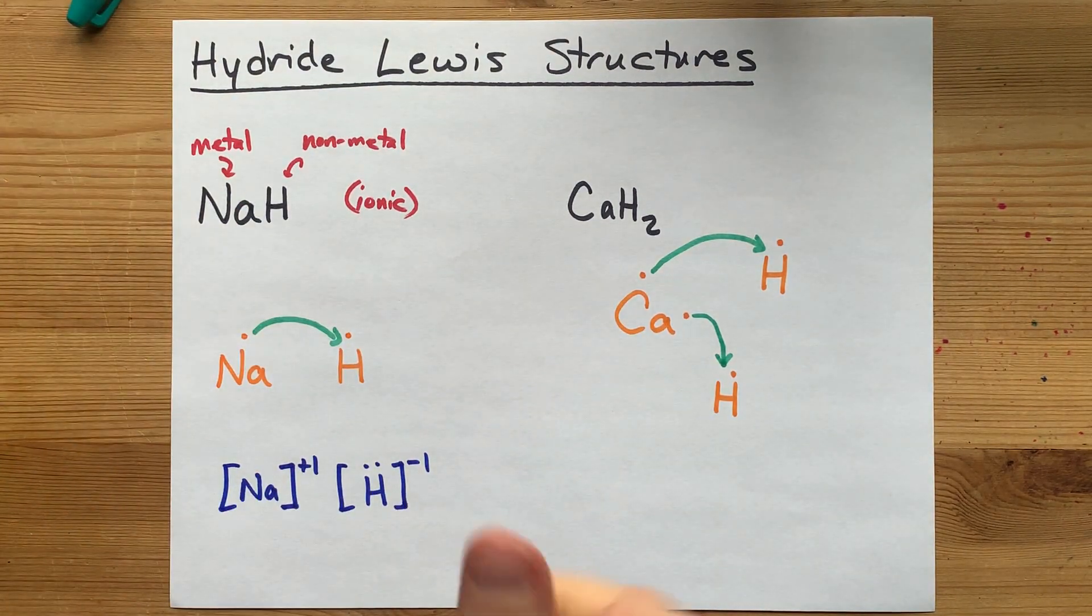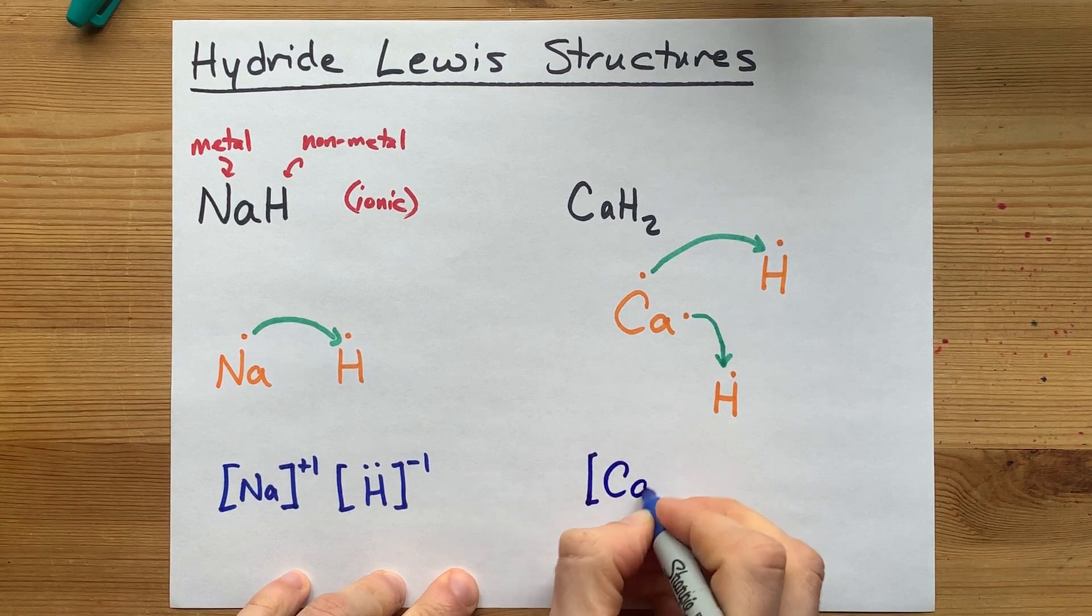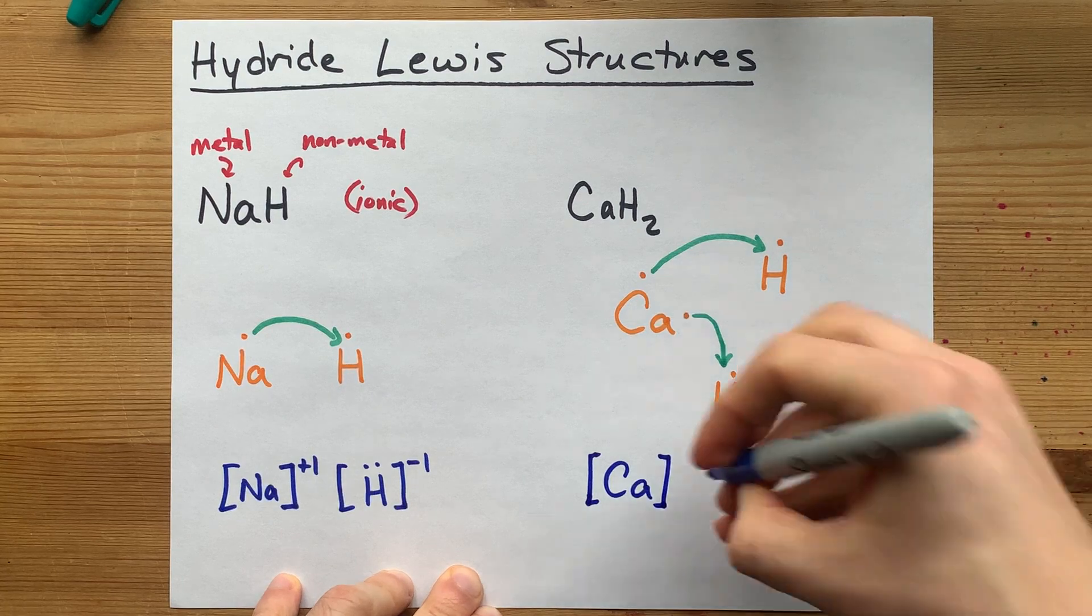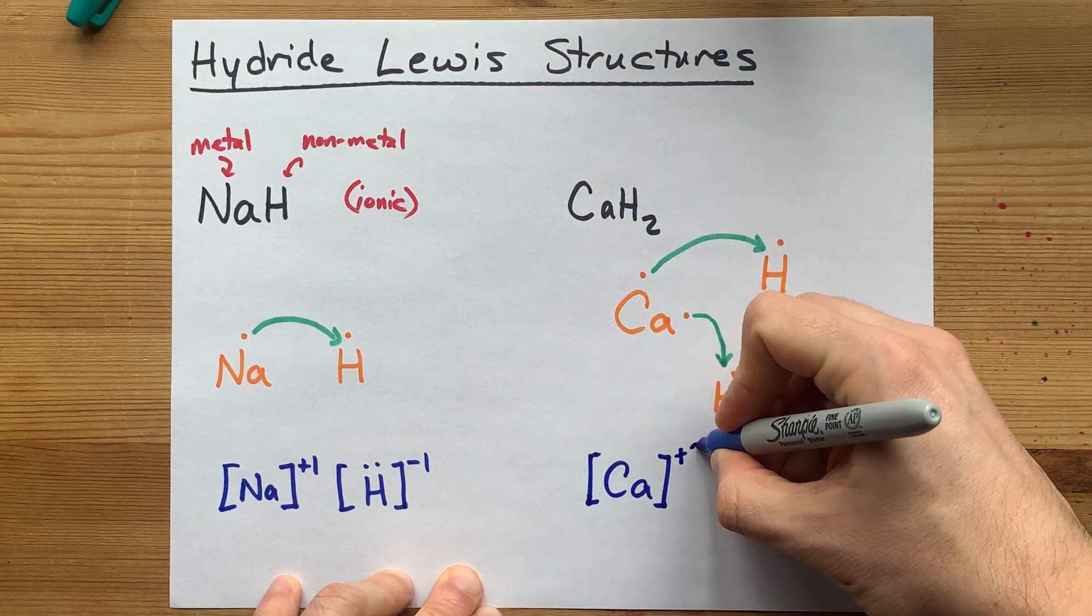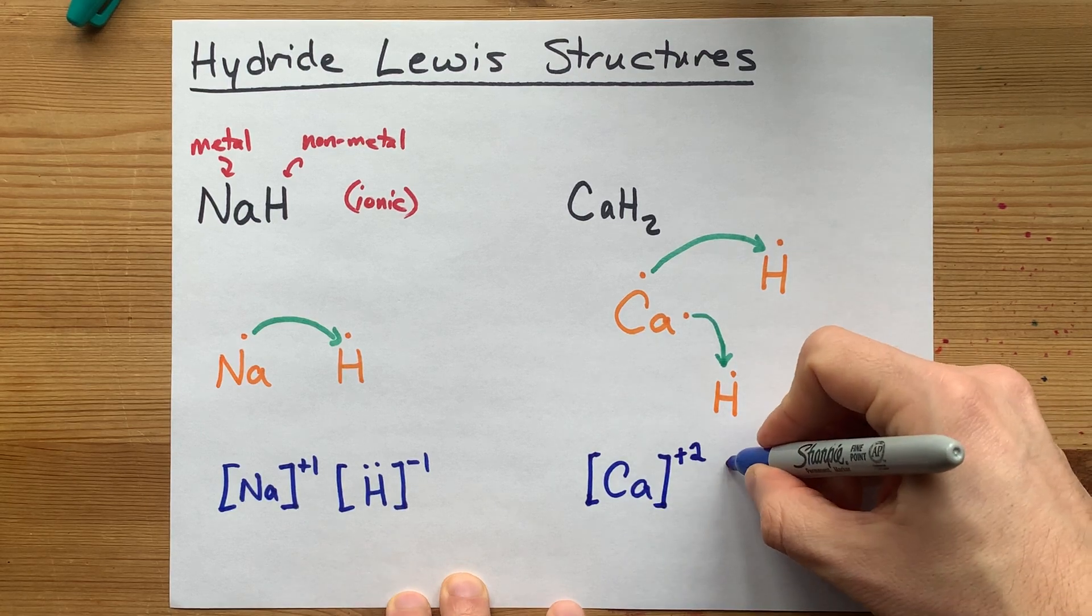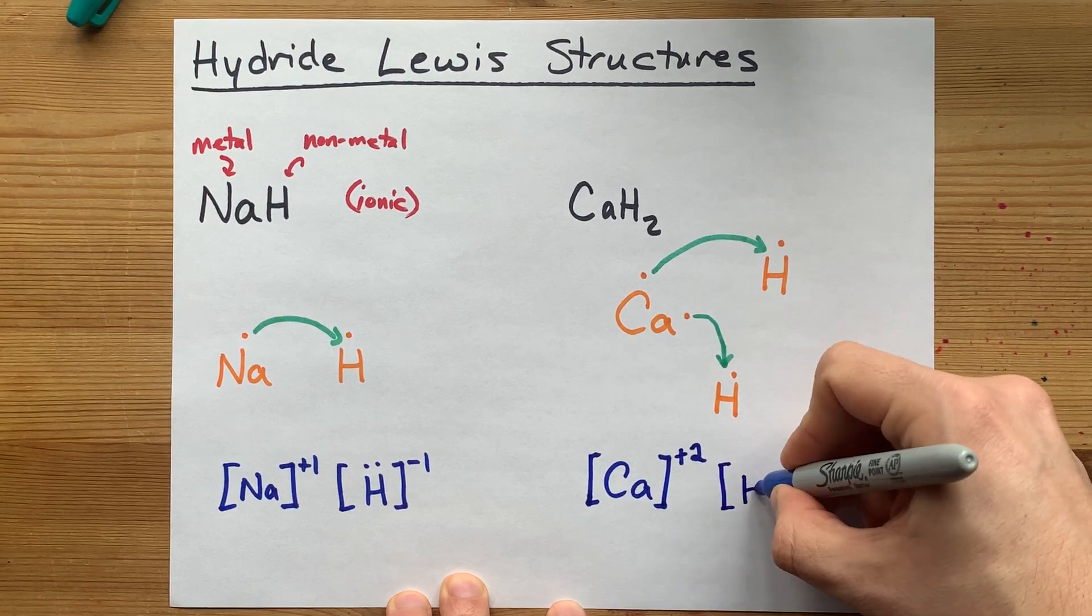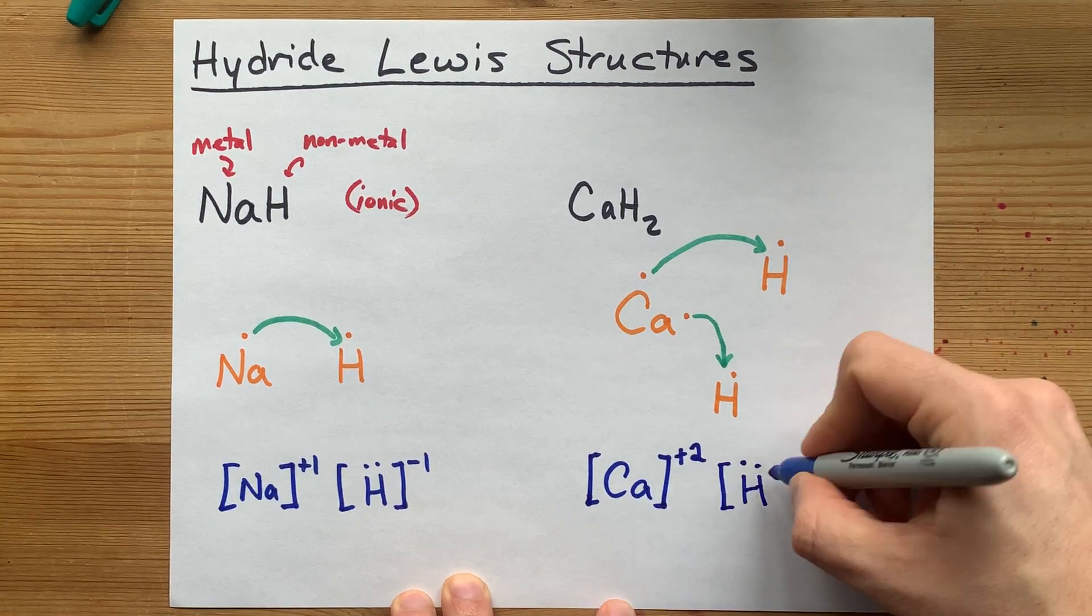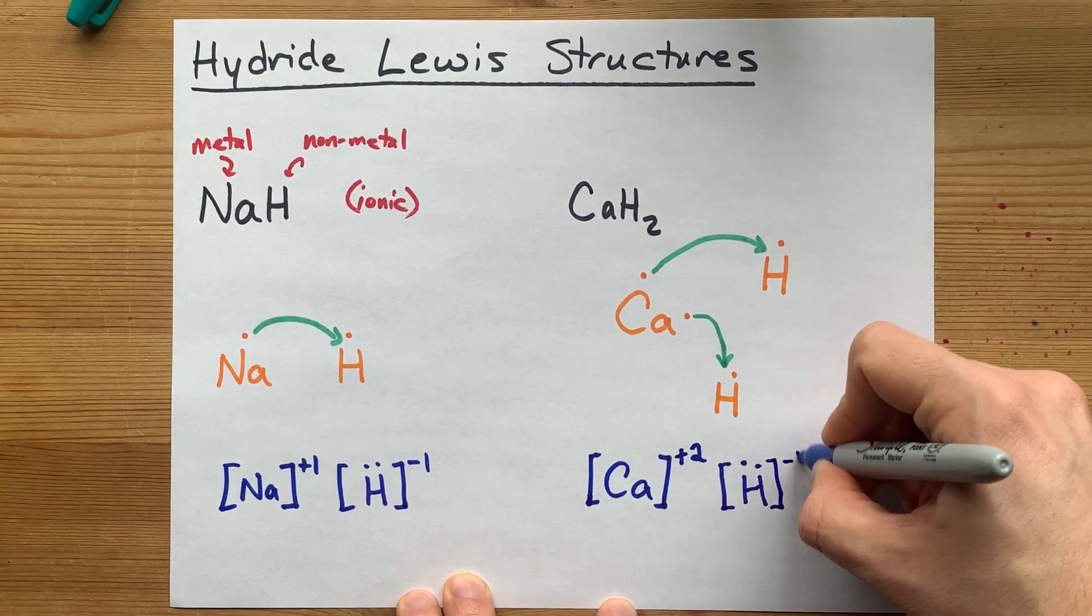And so you end up with calcium with no electrons in what was its outer shell. It lost two, so that's a plus-two charge. And the hydrogens end up with two electrons, one that it brought and one from the calcium. That gives it a minus-one charge.